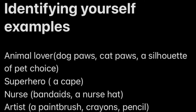And last of all, identifying yourself. Here are some examples: an animal lover could do dog paws, cat paws, or a silhouette of their pet. You could be a superhero, or you could be a nurse because you like to take care of people — so something around band-aids or a nurse hat. There's also an artist, so you could do something like a paintbrush, crayons, or a marker.